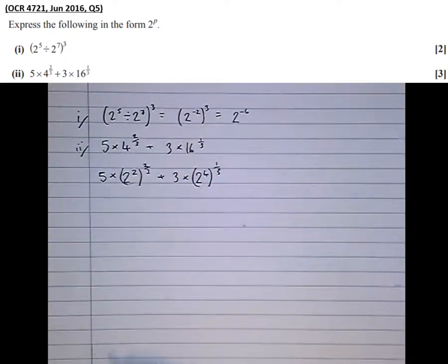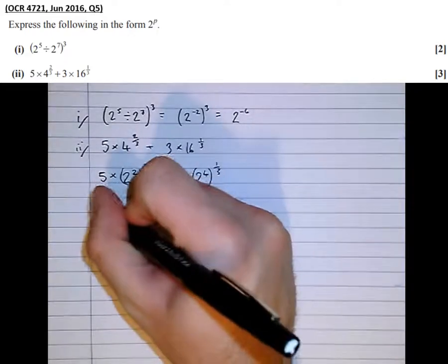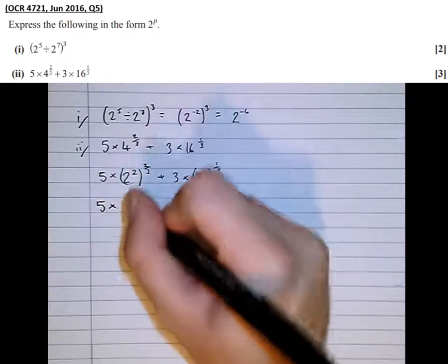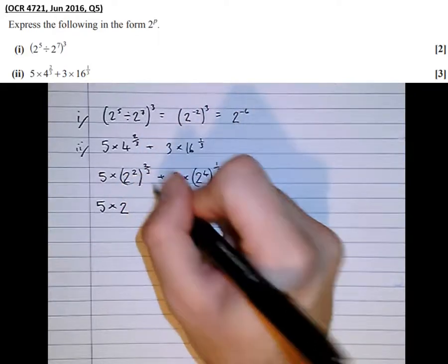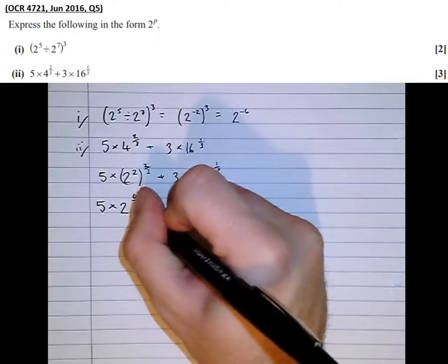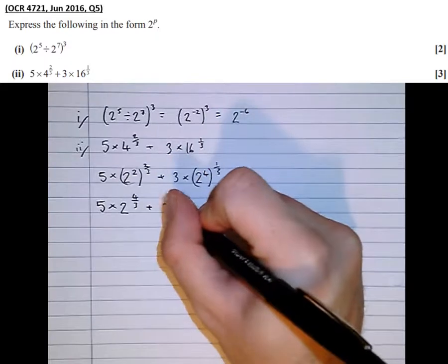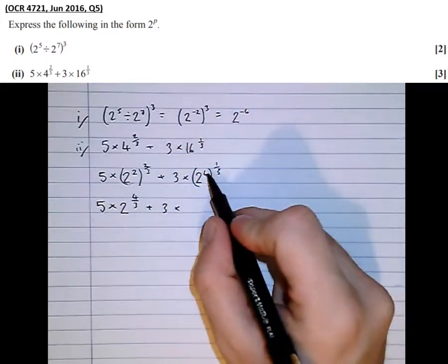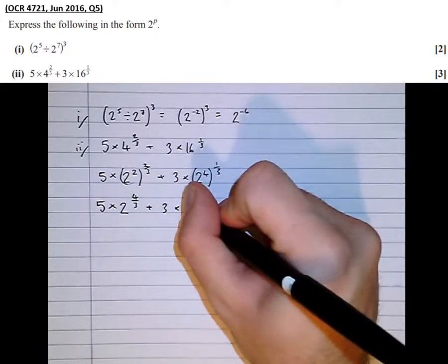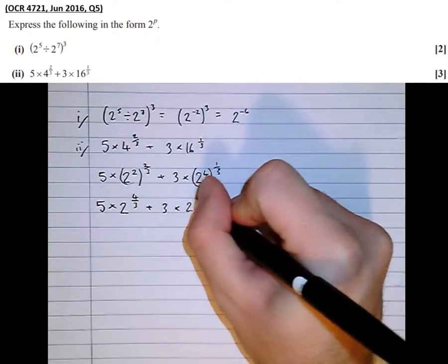Simplifying that further, we've got 5 times 2 to the, 2 times 2 thirds is 4 thirds, plus 3 times, 4 times a third is also 4 thirds, 2 to the power of 4 thirds.